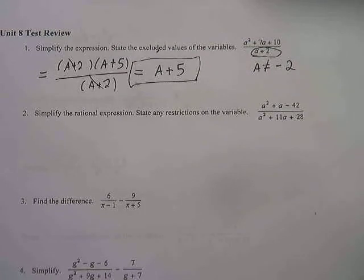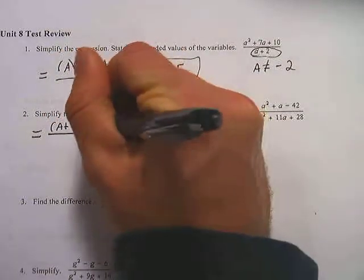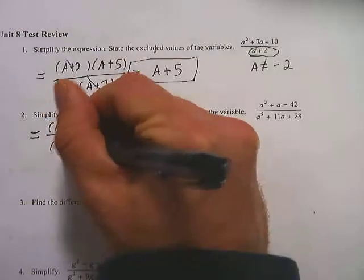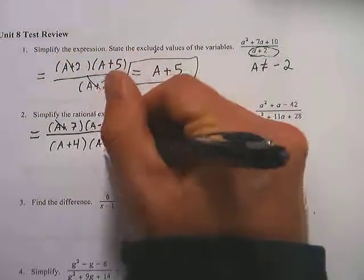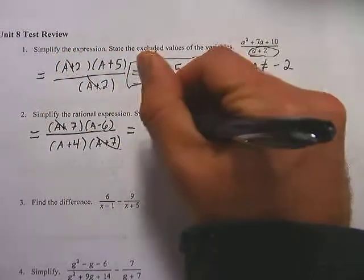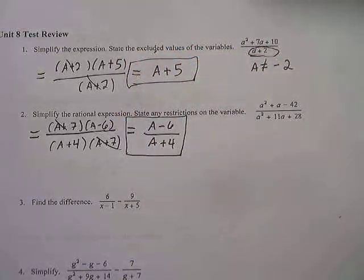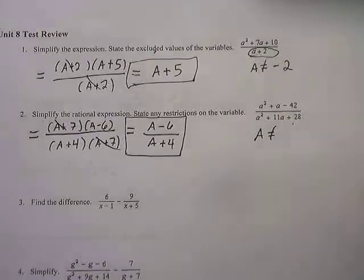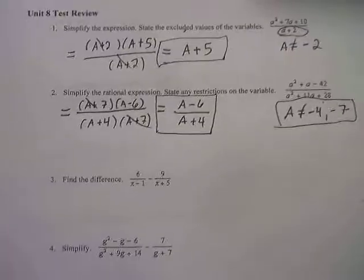On number 2, it's a similar process — simplify the rational expression and state any restrictions on the variable. I'm going to factor the top and the bottom. The top factors as a plus 7 times a minus 6, and the bottom factors as a plus 4 times a plus 7. The a plus 7s cancel out, leaving a minus 6 over a plus 4, which is the fully simplified expression. Since the denominator was a plus 4 times a plus 7, a cannot equal negative 4 and negative 7.